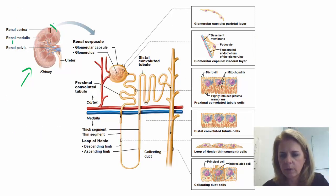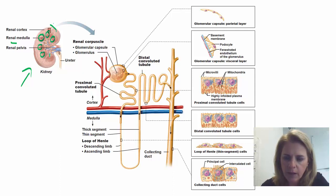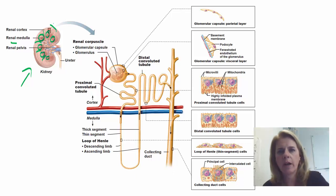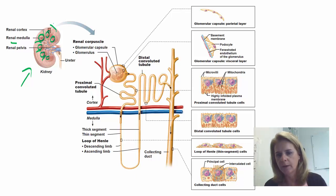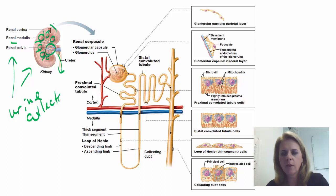So you have the renal medulla and the renal cortex. The medulla is actually made up of little structures called renal pyramids — these little lobes. The cortex not only surrounds the outside, it also invaginates and dips in to surround and form those individual lobes or renal pyramids that make up the renal medulla. The very center of the kidney is called the renal pelvis, and the renal pelvis is where urine collects before it travels down the ureter.